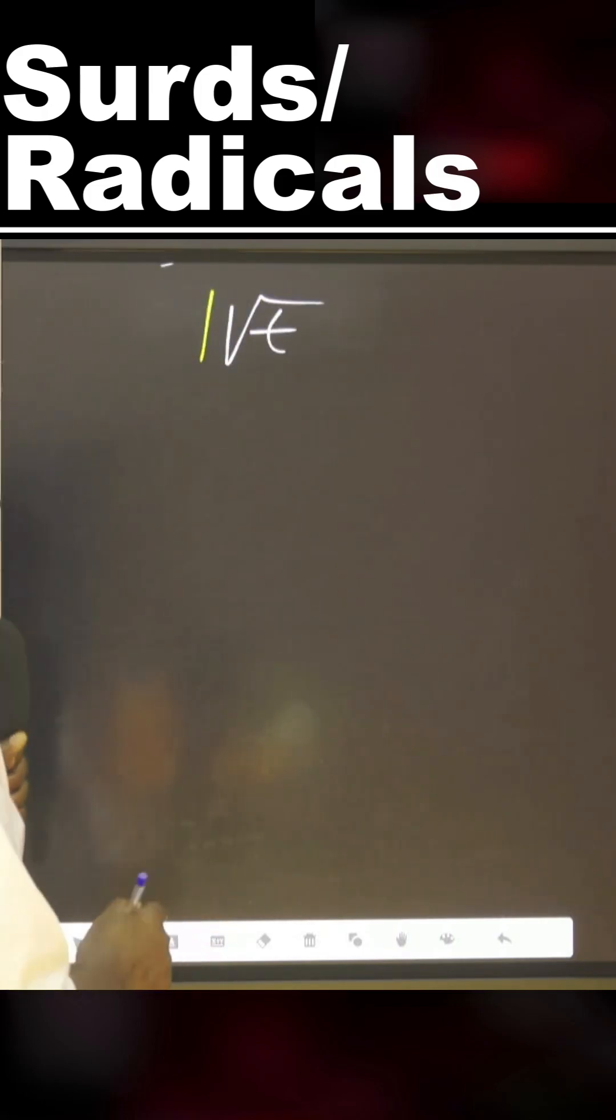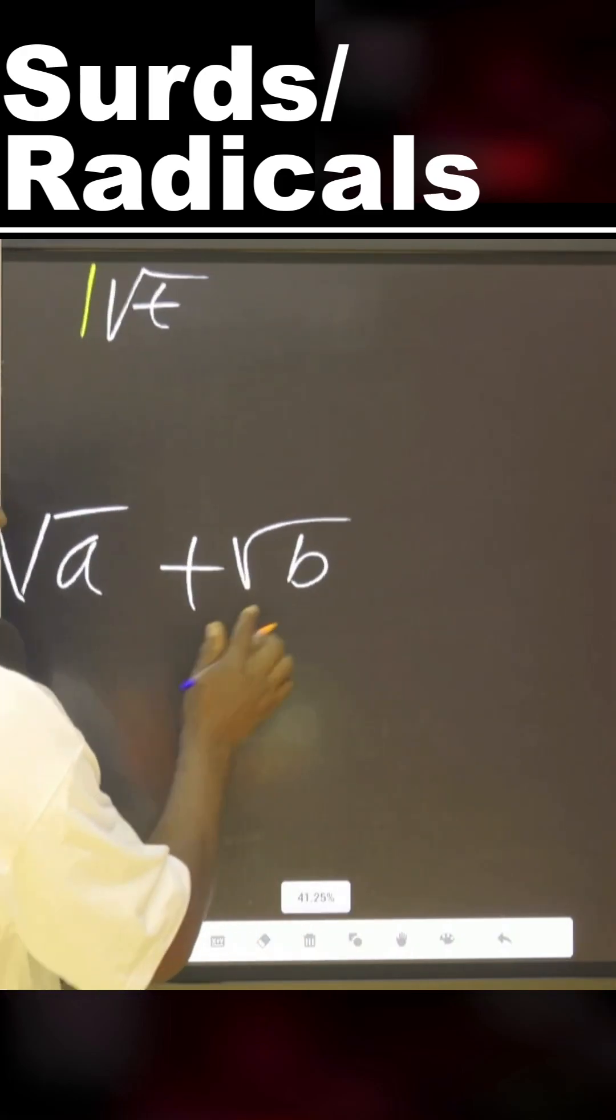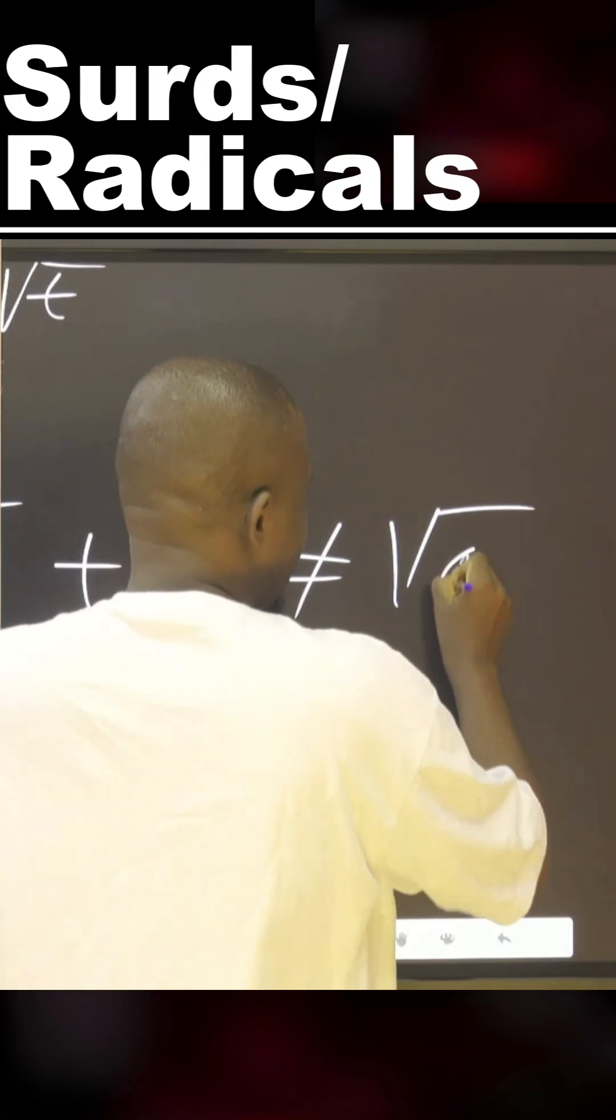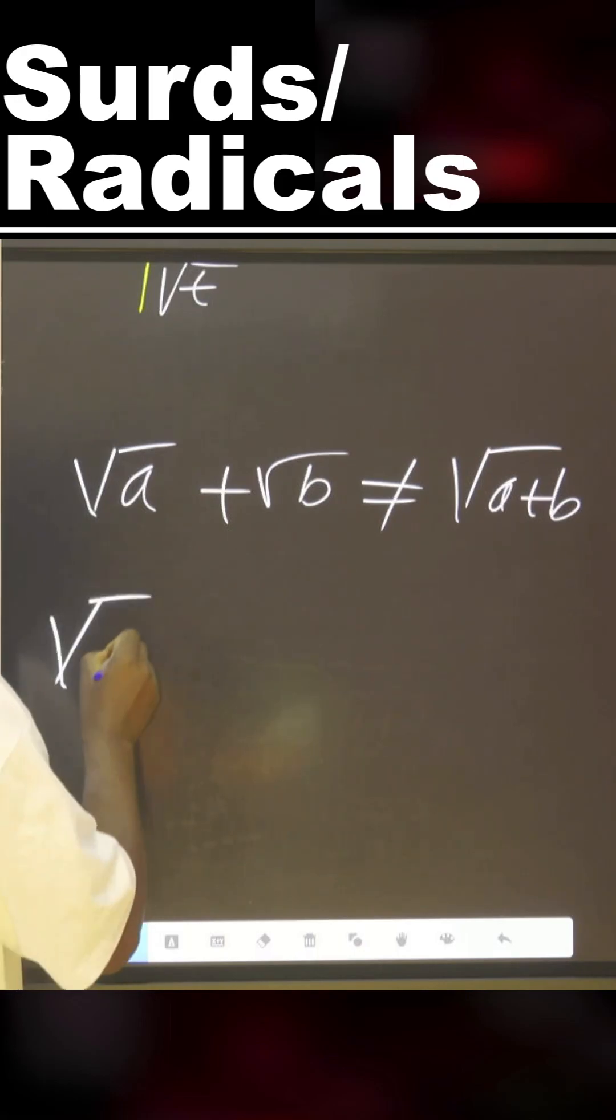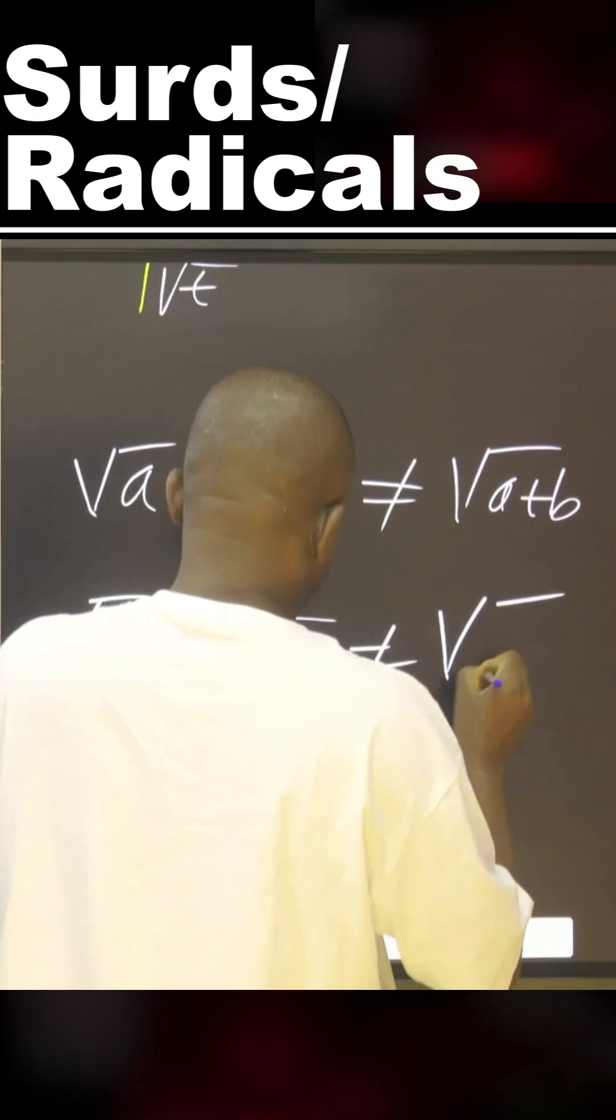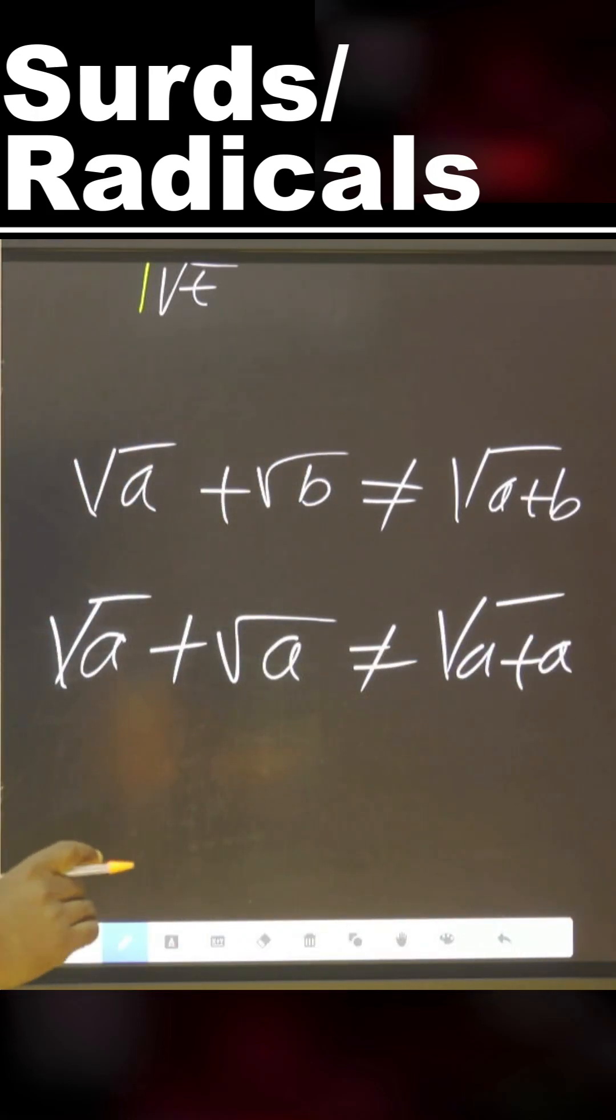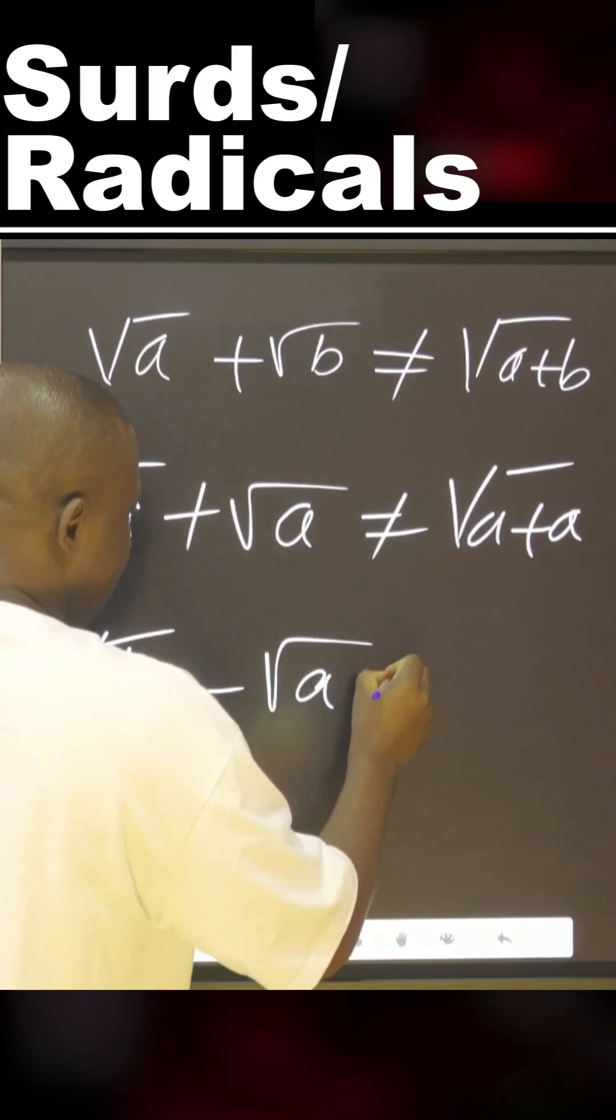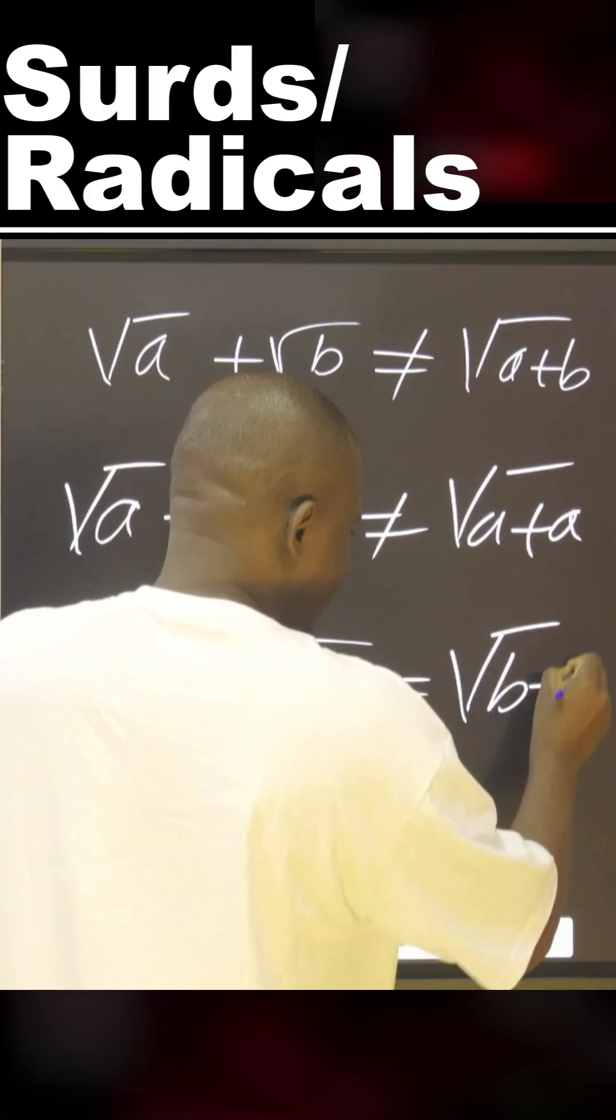But what you cannot do is if you have square root of A plus square root of B, this is not equal to square root of A plus B. You cannot do this. Neither can you say square root of A minus square root of B is equal to square root of B minus A. It's not possible. They are not equal. No.